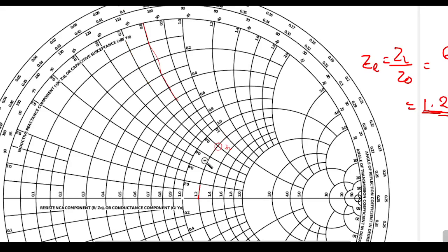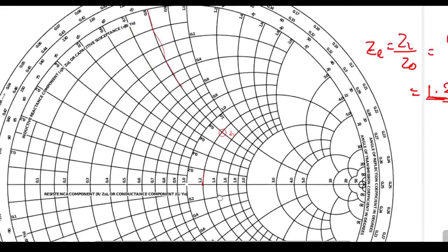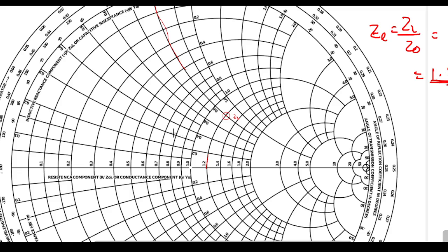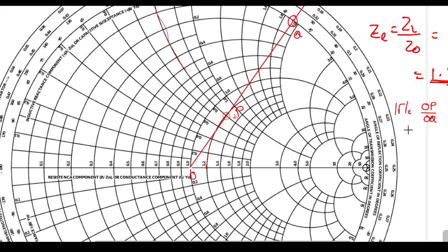Once we find the ZL point, you have to draw a straight line from the center through the ZL point. The center point is 1.0, so from here draw a straight line through the point exactly. Name the points: the center is O, the ZL point is P, and where the line meets the inner circle is Q. The reflection coefficient magnitude equals OP divided by OQ.